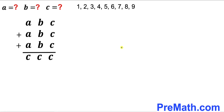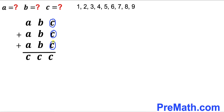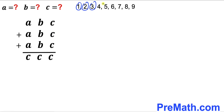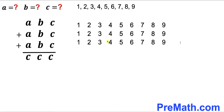Our very first step is to focus on the ones column. All three digits are C, C, and C. If we add them, we are supposed to get C as well in the ones place — in other words, all these numbers must be identical. We know C could be either 1 through 9.